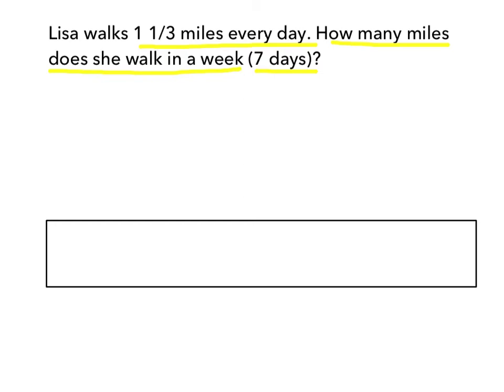In this case, Lisa is walking 7 groups of 1 and 1 third — seven times 1 and 1 third — because each of the seven days of the week she walks 1 and 1 third miles. So we have seven groups of 1 and 1 third miles equals something.